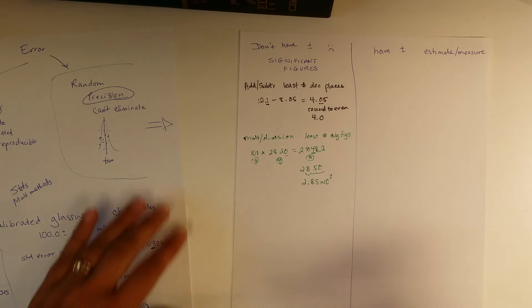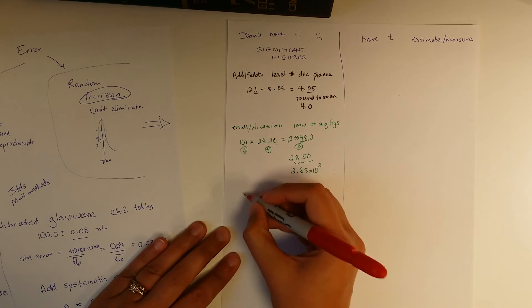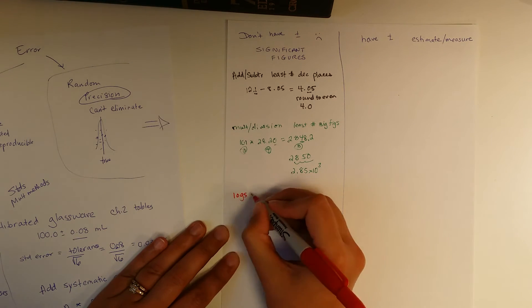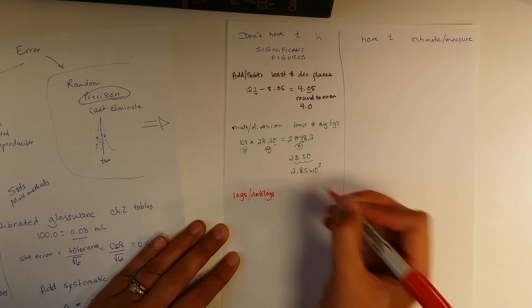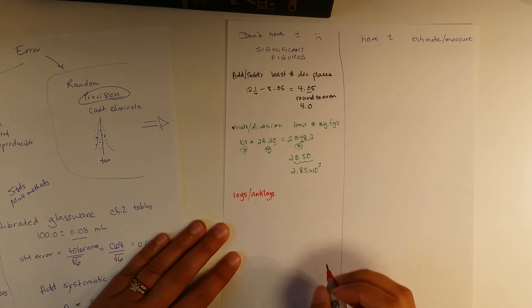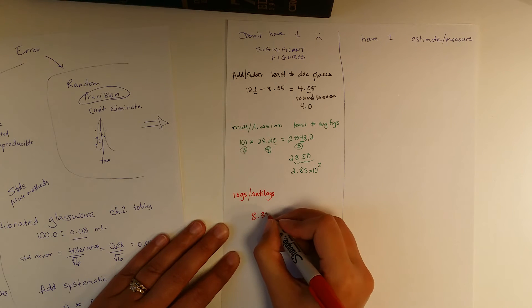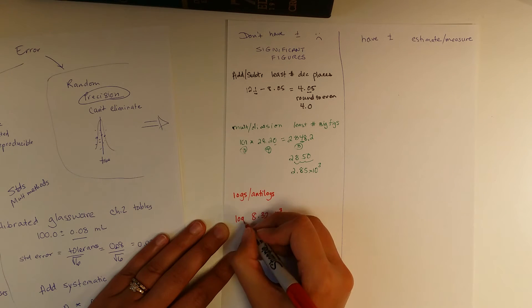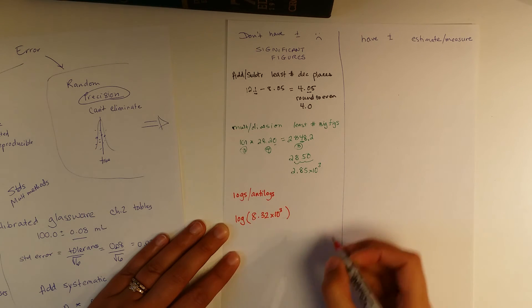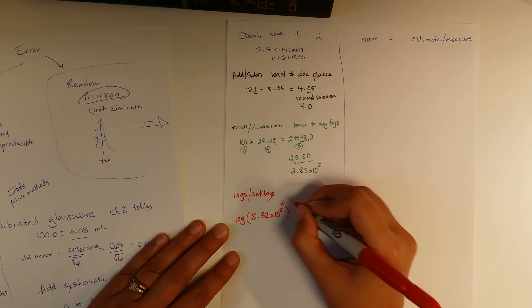Last funky one that we cover is logs and antilogs. And in that case, the significant figures come into the description of what it is. So let's just say we take a number. Let's just say we take 8.32 times 10 to the three. And we want to take the log of that.